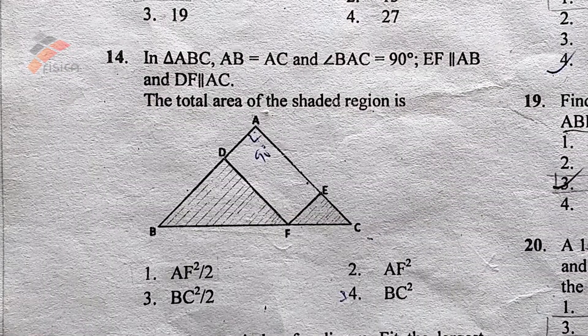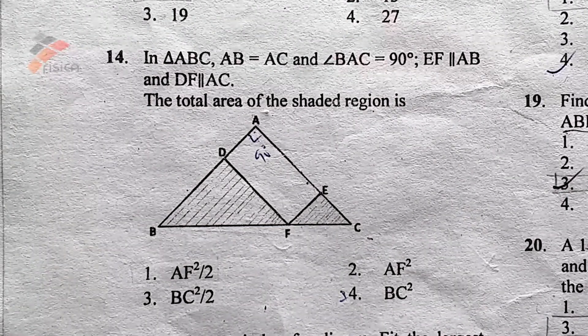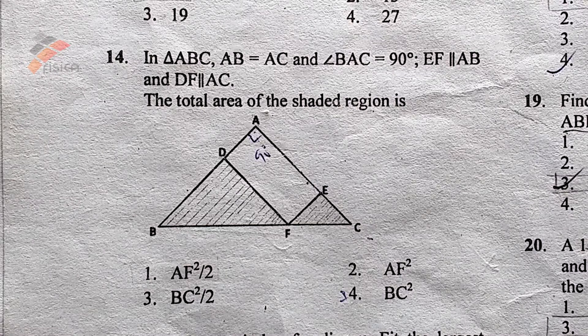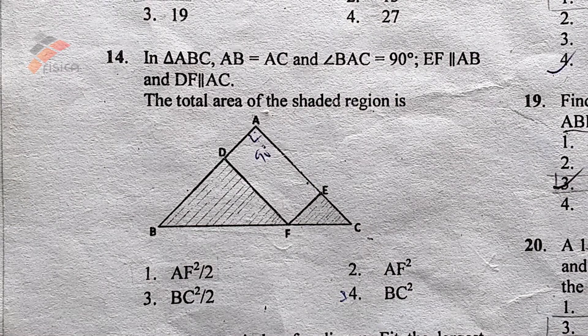In triangle ABC, AB equals AC and angle BAC equals 90 degrees, where EF is parallel to AB and DF is parallel to AC. We are asked to find out the total area of the shaded region.